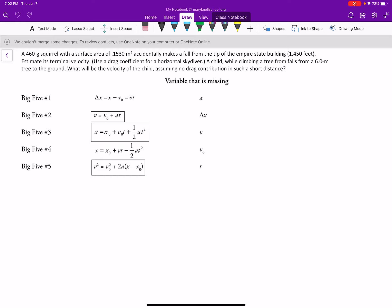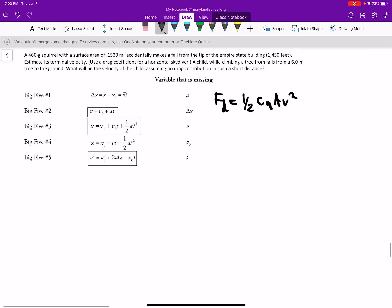Okay, so terminal velocity, we need the force drag equation. Force drag equals 1/2 cρa v squared. Force drag, we know that's mass times acceleration because force drag is equal to the force of gravity. Why? Because it's terminal velocity.